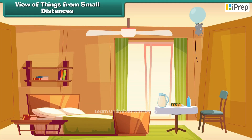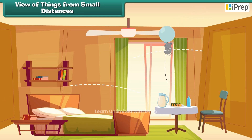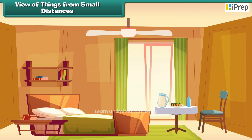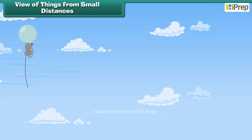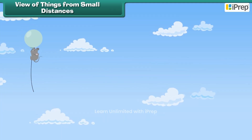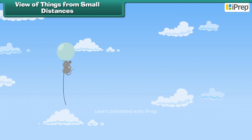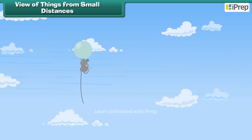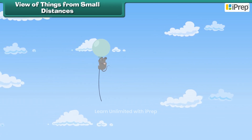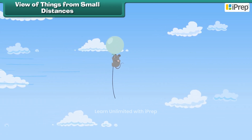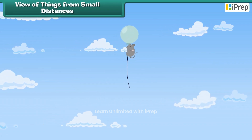The strong wind pushed the balloon outside of the room. Gradually, the gas balloon flew up and Gappu moved in the upward direction of the sky too.